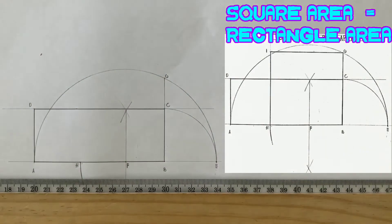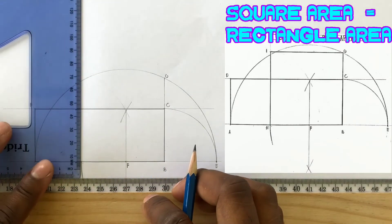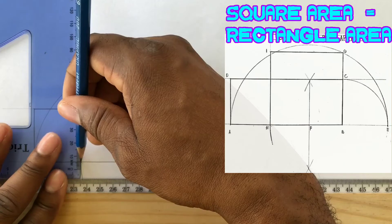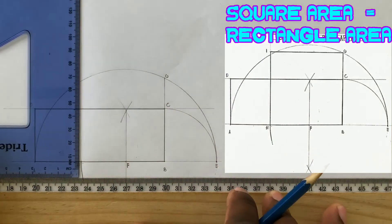Now using your set square along with your T-square, draw a perpendicular line from point H to extend beyond the semicircle.